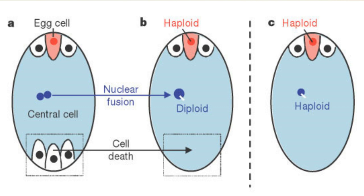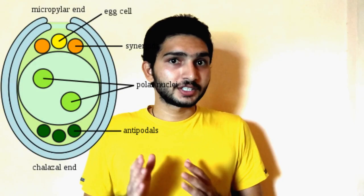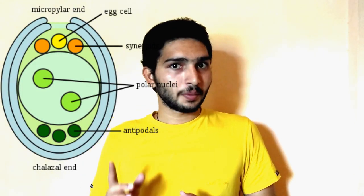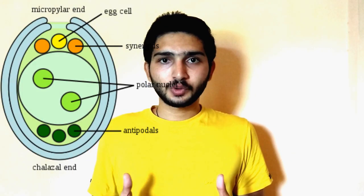One cell from the posterior side migrates towards the central cell and forms the central polar nucleus. They are called polar nuclei because they migrated from the poles. The egg cells are situated towards the micropylar side, and antipodals are placed on the posterior side, that is towards the chalazal end.